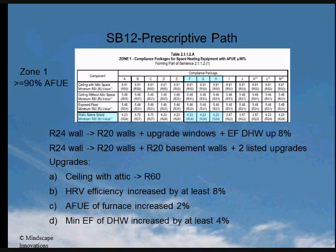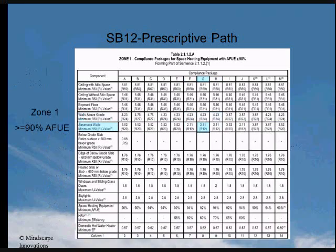Basement walls must be a minimum of R12, insulated to within 200 mm of the floor slab. For walk-out basements, the wall containing the door, and any wall where over 50 percent of the wall area is above grade, must meet the wall's above-grade insulation requirements. In package G, that would be R24.